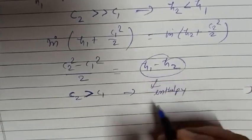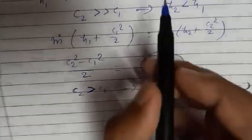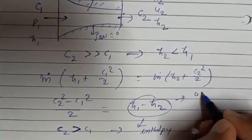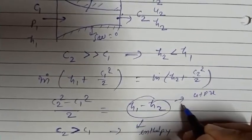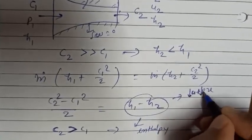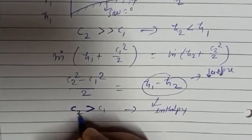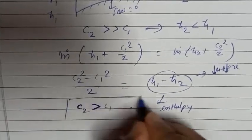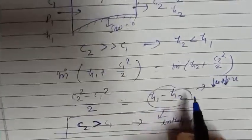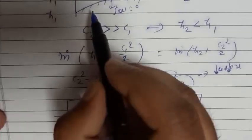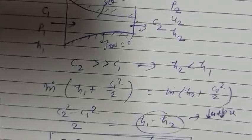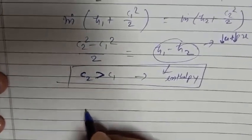As velocity increases, enthalpy decreases, which means temperature also decreases, and internal energy decreases. Similarly, there is also a diverging type of nozzle.